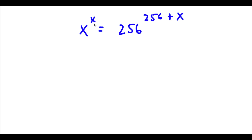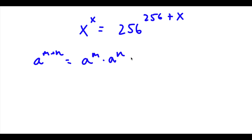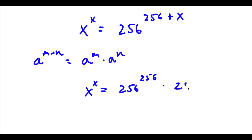Alright, so I have x to the power of x is equal to 256 to the power of 256 plus x. Now if I have something in the form a to the power of m plus n, this is equal to a to the power of m times a to the power of n. So 256 to the power of 256 plus x is going to equal 256 to the power of 256 times 256 to the power of x.